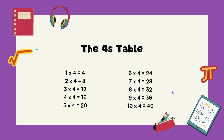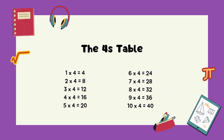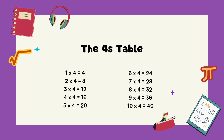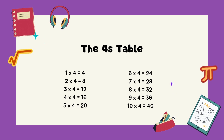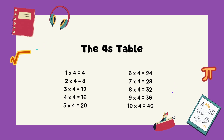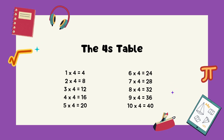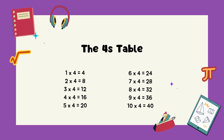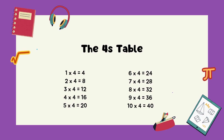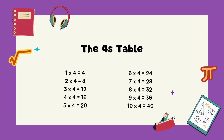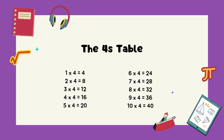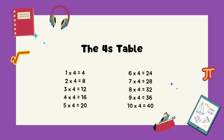The fours table. 1 times 4 equals 4. 2 times 4 equals 8. 3 times 4 equals 12. 4 times 4 equals 16. 5 times 4 equals 20. 6 times 4 equals 24. 7 times 4 equals 28. 8 times 4 equals 32. 9 times 4 equals 36. 10 times 4 equals 40.